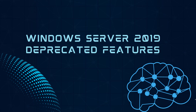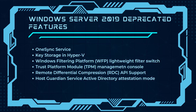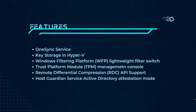Deprecated features in Windows Server 2019 include OneSync Service, Key Storage in Hyper-V, Windows Filtering Platform Lightweight Filter Switch, the Trusted Platform Module (TPM) Management Console, Remote Differential Compression API support, and the Host Guardian Services for Active Directory attestation mode.